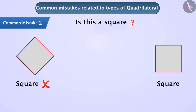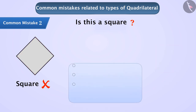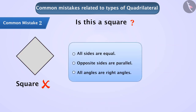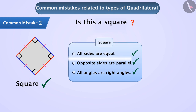It is necessary to understand the properties of different types of quadrilateral in order to identify them correctly. Similar to what we see here, all sides are equal, opposite sides are parallel, and all angles are right angles. Therefore, we can say this is a square, and it is correct to identify a quadrilateral on the basis of its properties.